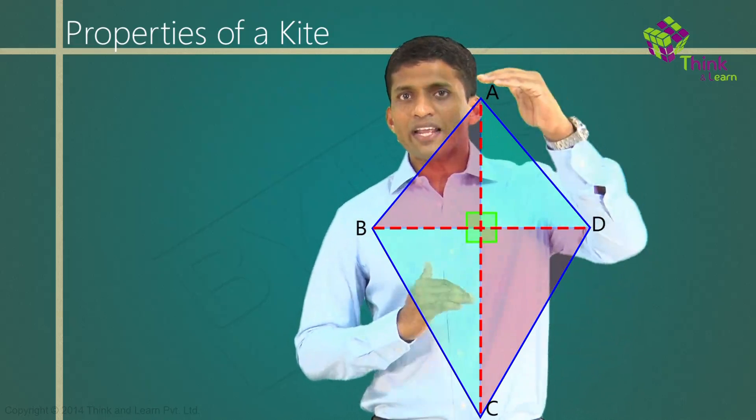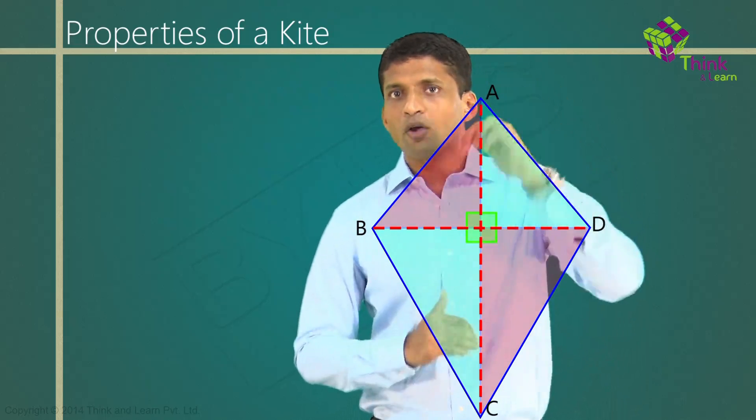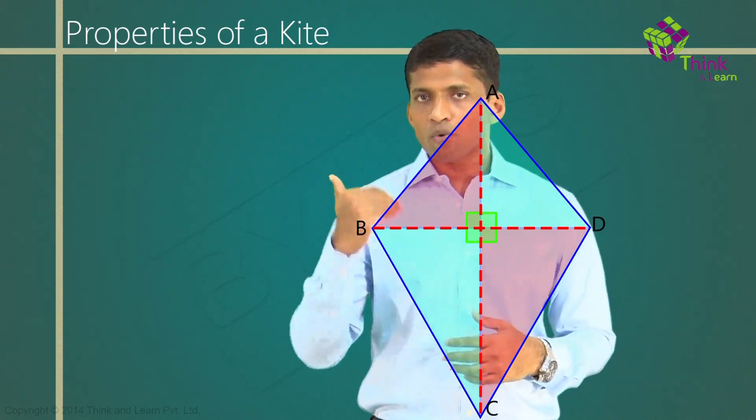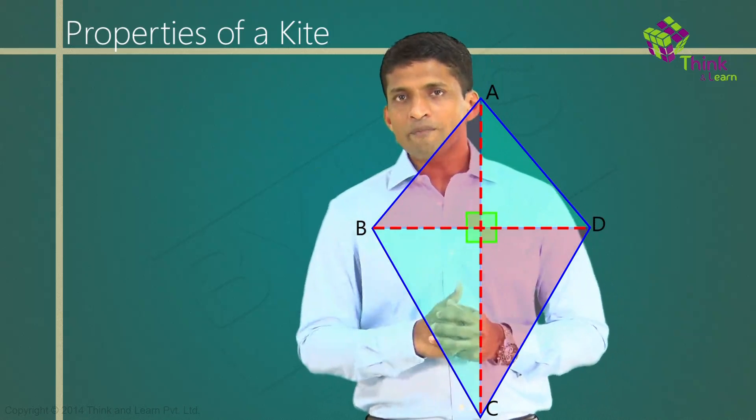Angle B is equal to angle D, and angle A and angle D are not equal. So, what is that you observed if you note it down? What is that you will get? In a kite, diagonals are perpendicular to each other.